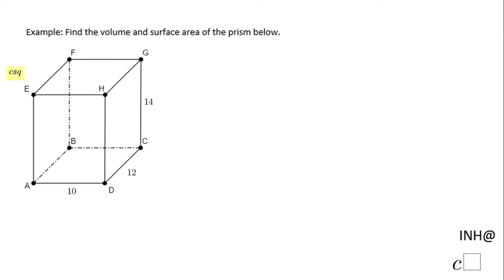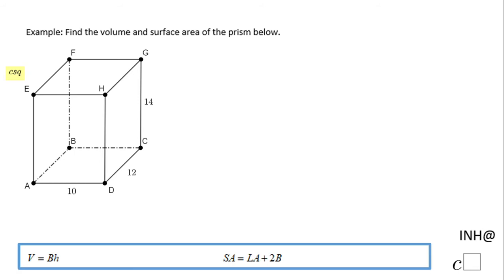Welcome back to any help at C squared. In this example we need to find the volume and the surface area of the prism below. For that reason I'm going to use these two formulas. You notice here the volume...